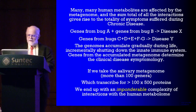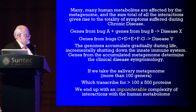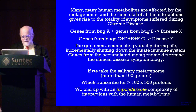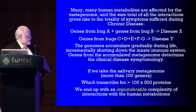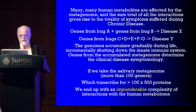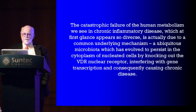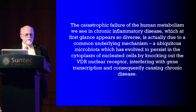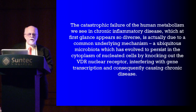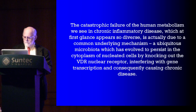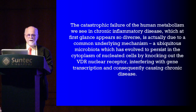If we take the salivary metagenome, which is much bigger than HIV — about 50,000 proteins instead of 17 — we basically end up with an imponderable complexity, which is what you see in all the autoimmune syndromes. The catastrophic failure of human metabolism we see in chronic inflammatory disease, which at first glance appears so diverse, is actually due to a common underlying mechanism: a ubiquitous microbiota that has evolved to persist in the cytoplasm of nucleated cells by knocking out the VDR nuclear receptor.